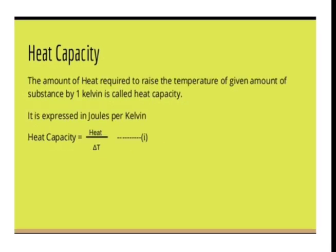The amount of heat required to raise the temperature of a given amount of substance by 1 Kelvin is called heat capacity. Heat capacity is expressed in units of Joules per Kelvin, since heat is in Joules and the temperature change is in Kelvin.